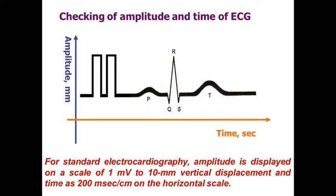On standard electrocardiography, 10 mV is displayed on the scale as 10 mm vertical displacement. We also measure time, which is measured in seconds — meaning the duration of the P wave, QRS complex, and T wave, as well as the duration of intervals and segments, are all measured in seconds. Amplitude is measured in millimeters.